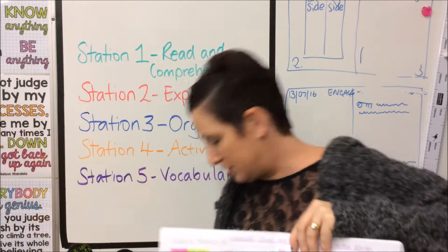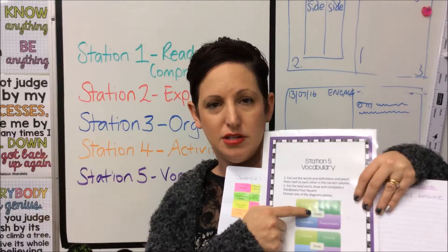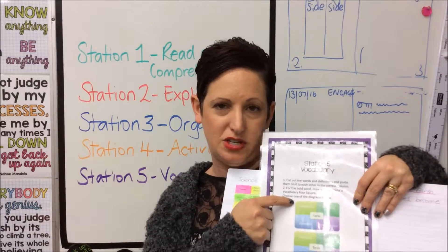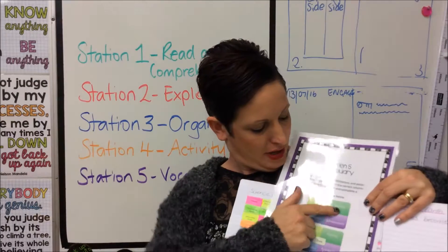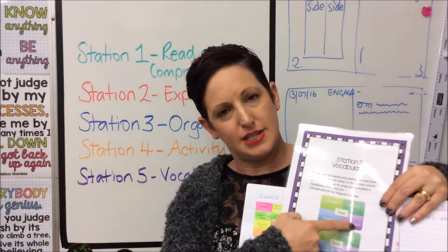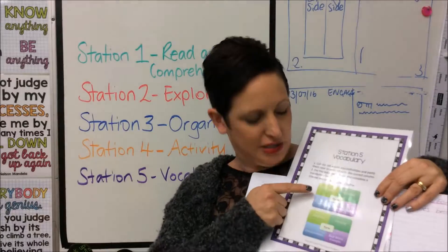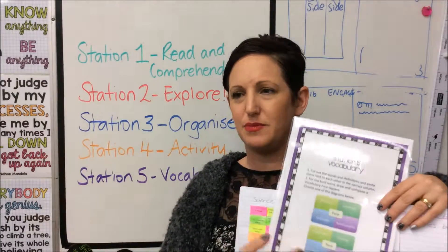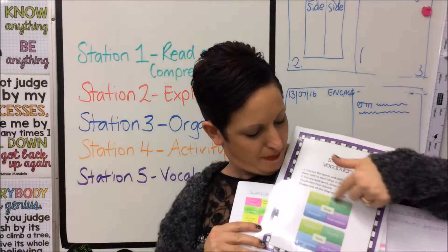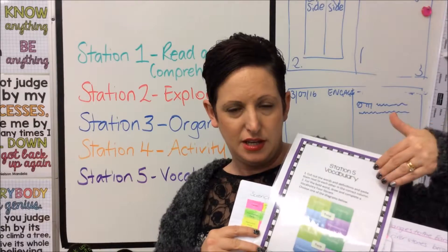A vocab four square is a little organizer with four squares. In the middle you write your word, at the top you write the definition — and if you can't remember it, it's right there on your sheet. Then you do a drawing of the word. At the bottom there are two choices: you can either do an example or non-example of the word, or you can do characteristics and a real-world example. I personally prefer the example/non-example option, but it's completely up to you.